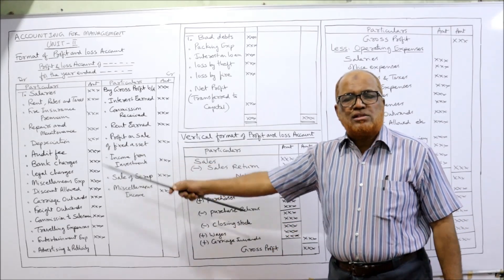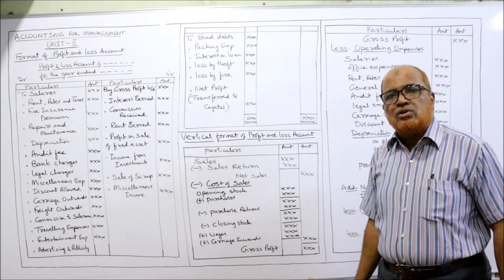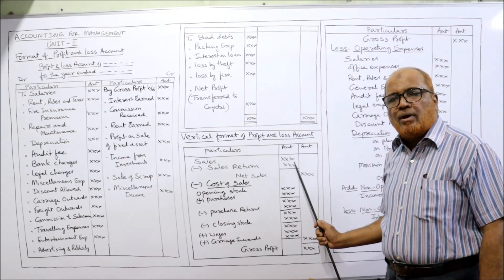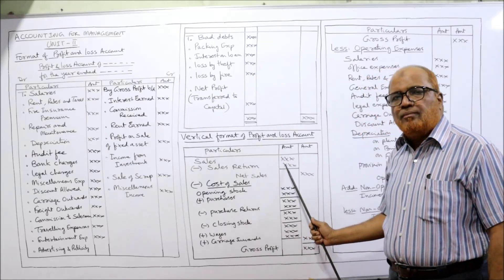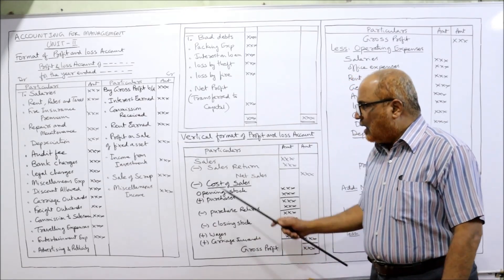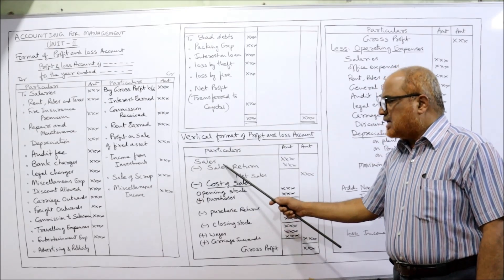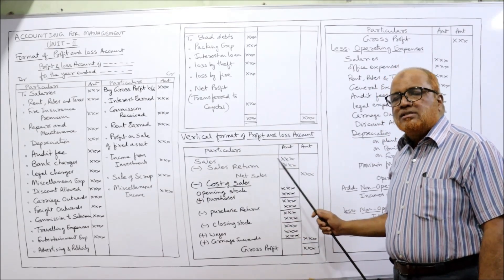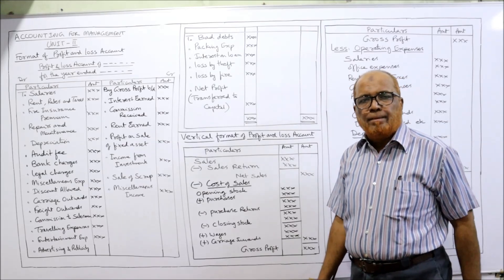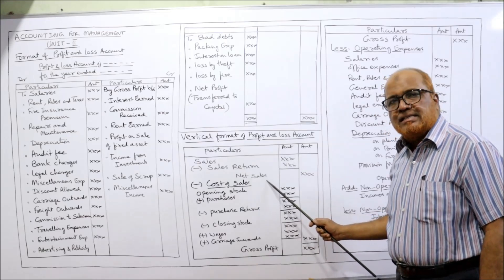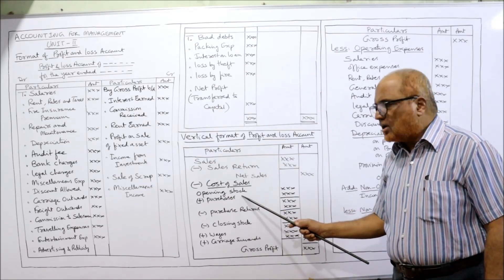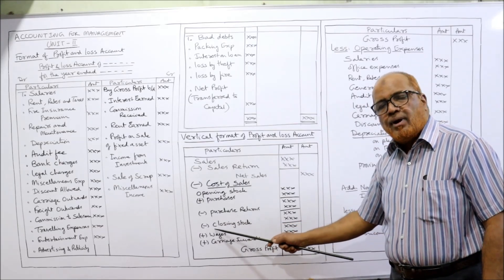Analysis is difficult with the horizontal form; the vertical form is more suitable. In the vertical format of the profit and loss account, there are two columns on the right-hand side — an inner column for calculations and an outer column for final amounts. There is no debit and credit because it is a statement, not an account. First we take the revenue — sales revenue. If there are sales returns or returns inward, subtract them: sales minus sales returns gives net sales. From net sales, deduct the cost of sales.